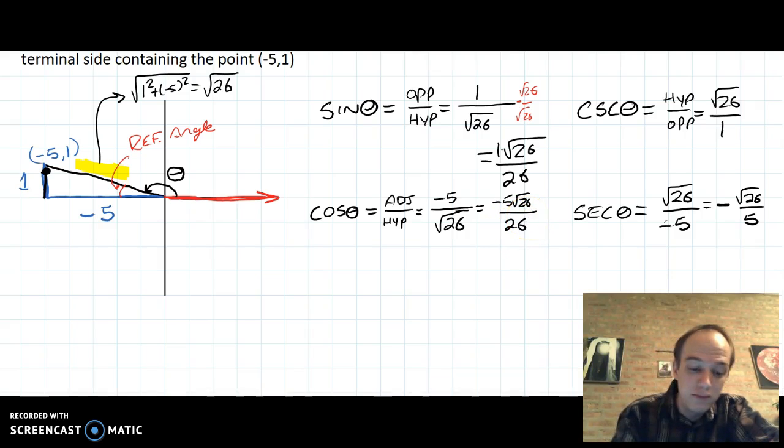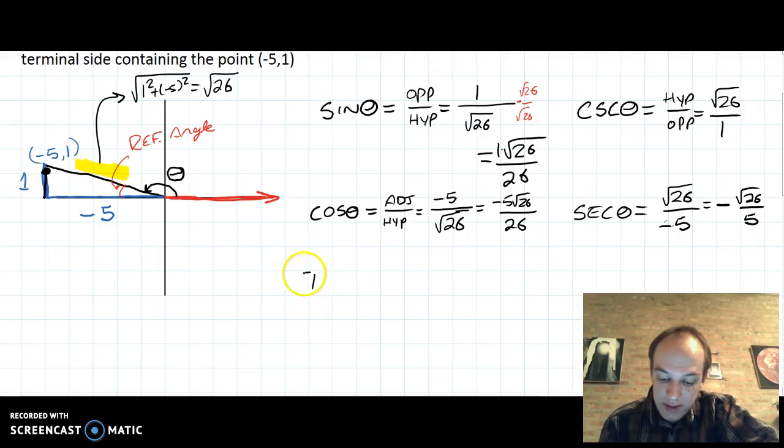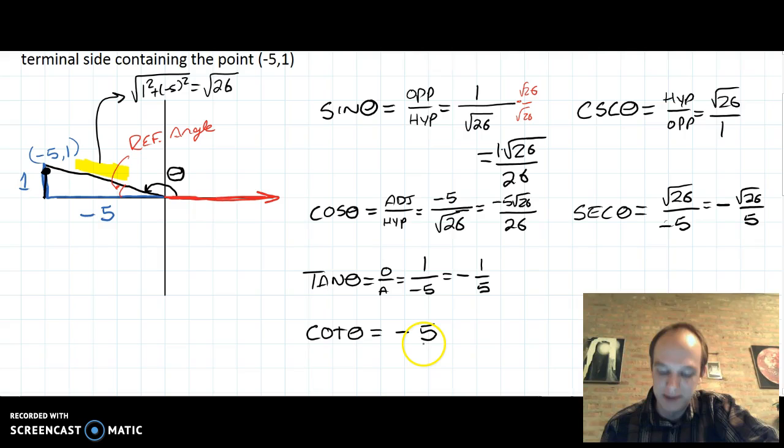Two more to go. Tangent of theta is opposite over adjacent. Well, the opposite is 1. The adjacent is -5. Again, it's kind of weird to leave that negative on the bottom. So we'll do cotangent of theta. That's the reciprocal of -1/5. That's -5 over 1 or just -5. Done.